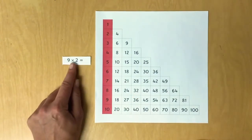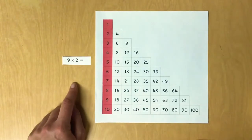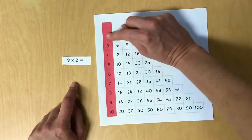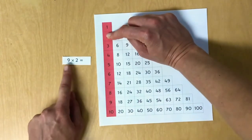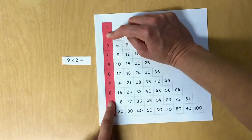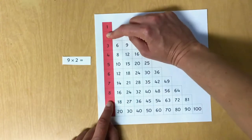Nine times two equals blank. Remember, we start with the smaller number. Which number are we starting with? You got it, two. Put your finger on it and your other finger goes on the next number, the nine. Do you remember which finger we slide over first?